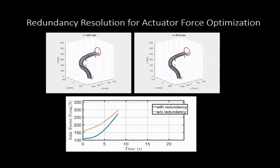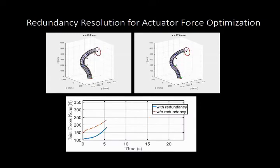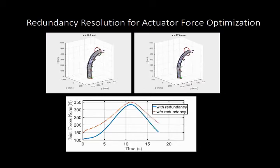For real-time control, we present a redundancy resolution algorithm that reduces the actuator loads while avoiding joint limits. These joint limits are imposed by the constraints of joint collision within the ASL as well as spacer disk interference.